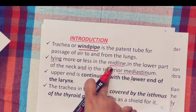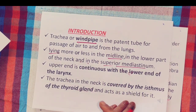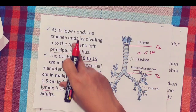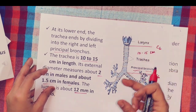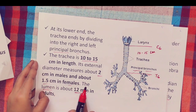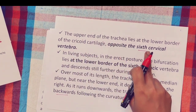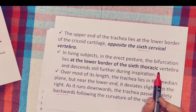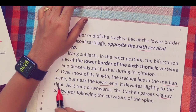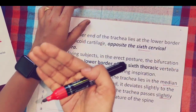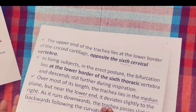Summary of introduction: the windpipe is present in the midline. The upper end is at the lower border of the cricoid cartilage at C6. In the neck portion it is covered by the isthmus of the thyroid gland. Length is 10–15 cm, diameter is 2 cm in males and 1.5 cm in females, lumen is 12 mm. Upper end at C6, lower end at T6, lying in the median plane with a slight right deviation and slight backward curve following the thoracic vertebra.